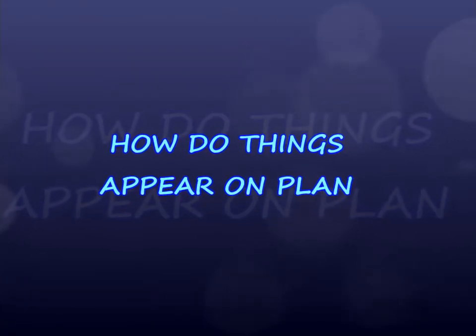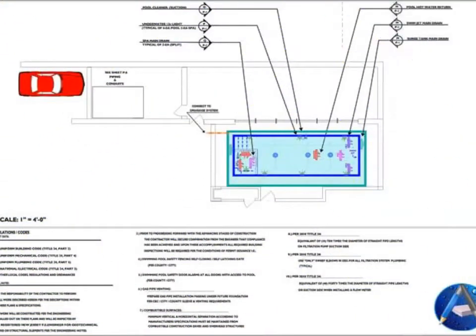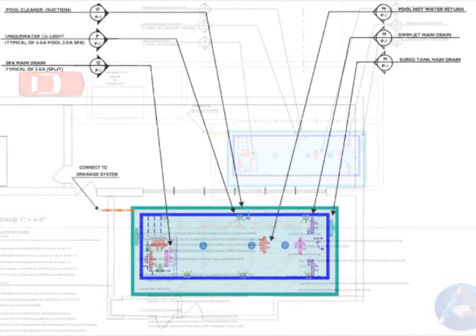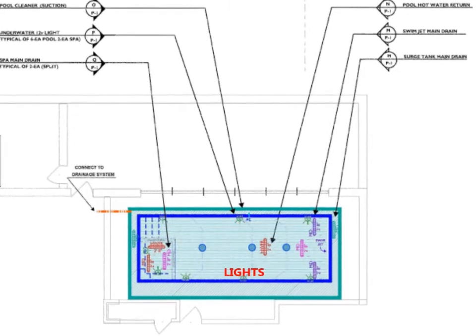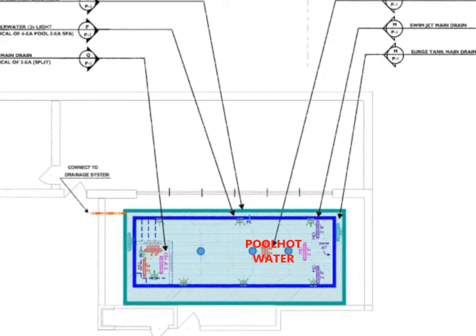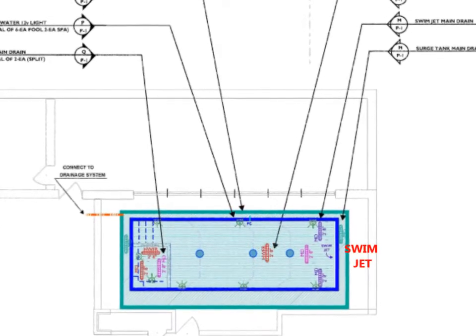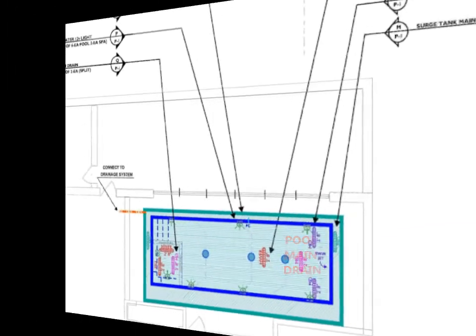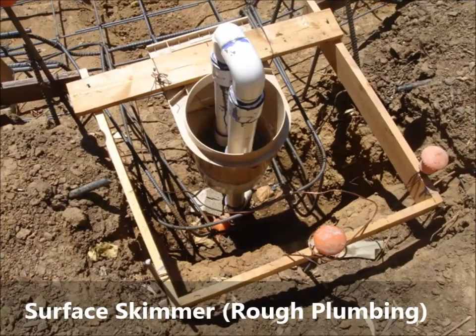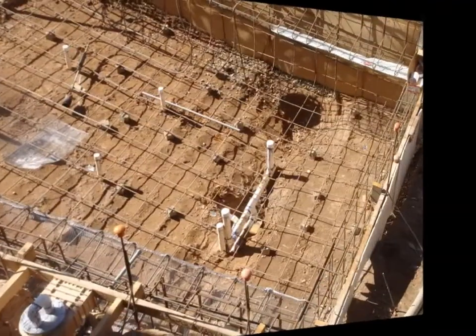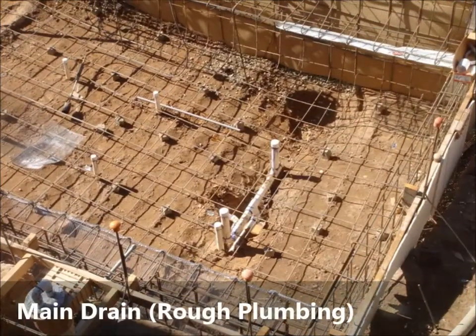A lot of things appear on the plan. We start by identifying each plumbing or conduit operational function, such as pool cleaner, pool and spa lights, spa main drain, pool hot water floor return, pool main drain suction, and so on. These pool and spa functions collaborate with the pipes and conduits in a distribution of arteries that are sized according to the water flow requirements and the electrical amp load demands, in accordance with providing the most energy-efficient operations.